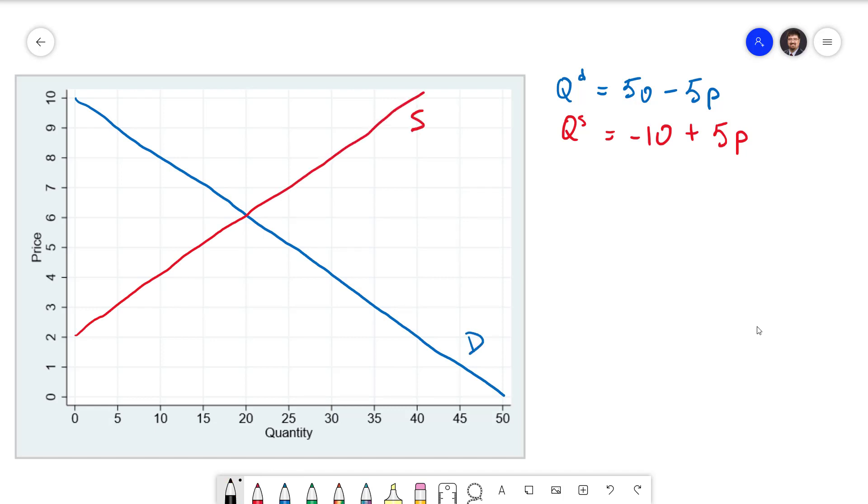Since we've already graphed these particular curves several times we won't get into the details again. As we did earlier we are going to implement a tax with a size of 2 per unit. The way we go about this is to find a quantity which is demanded at a price 2 higher than it is supplied.